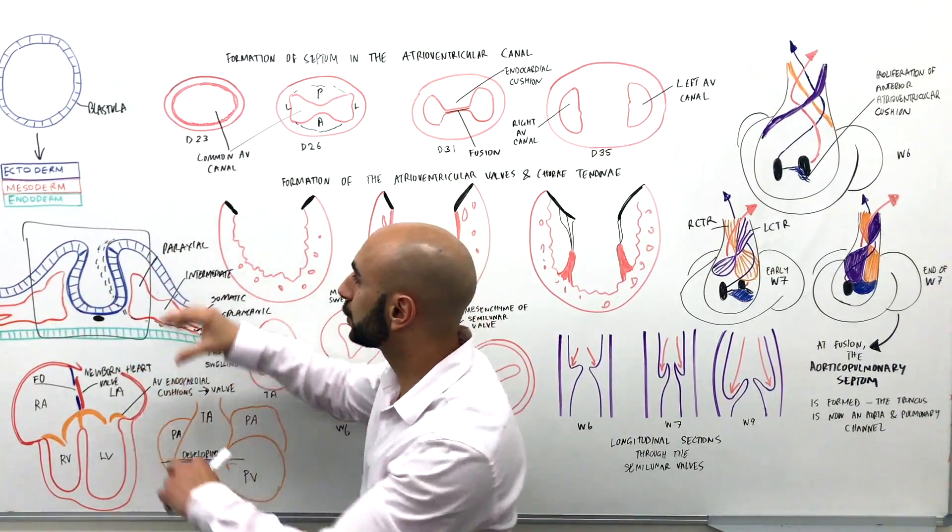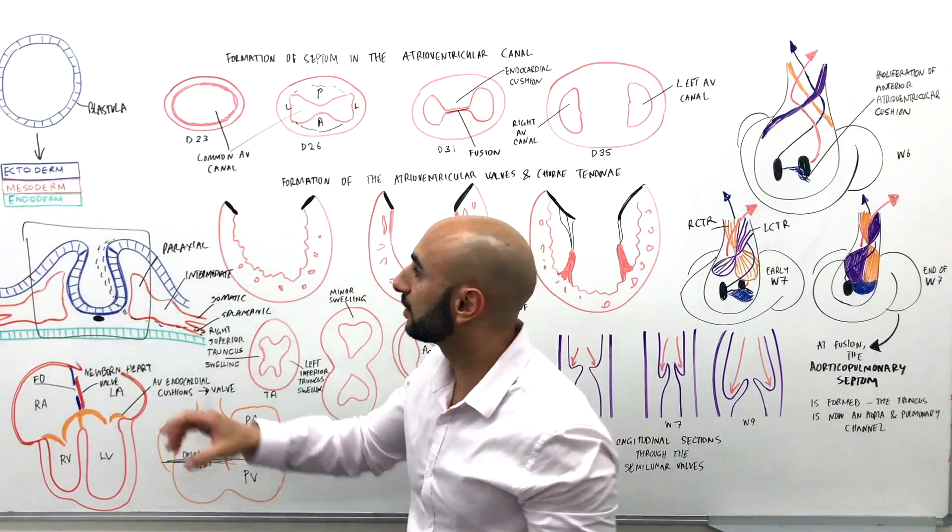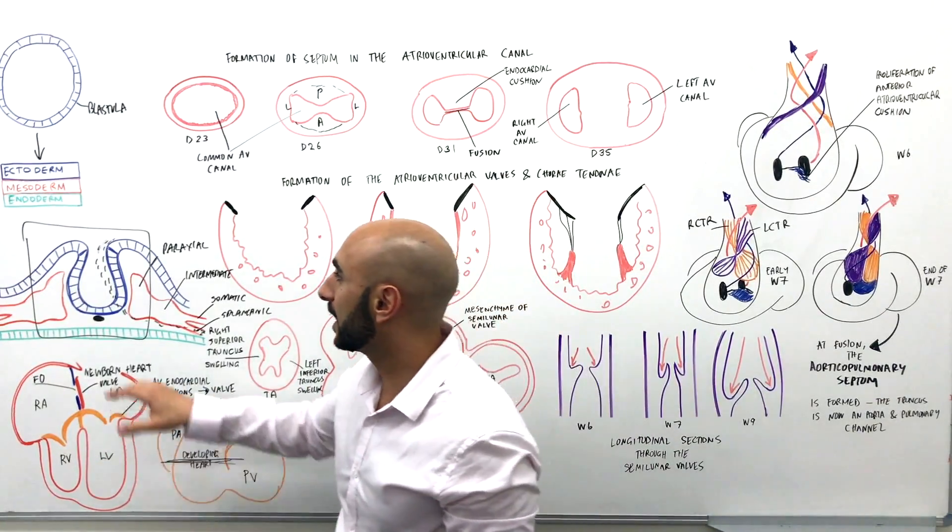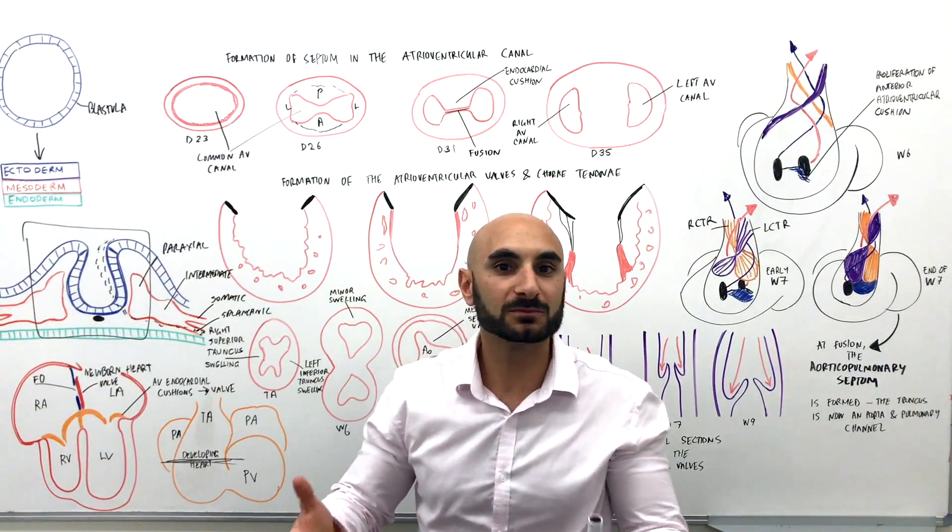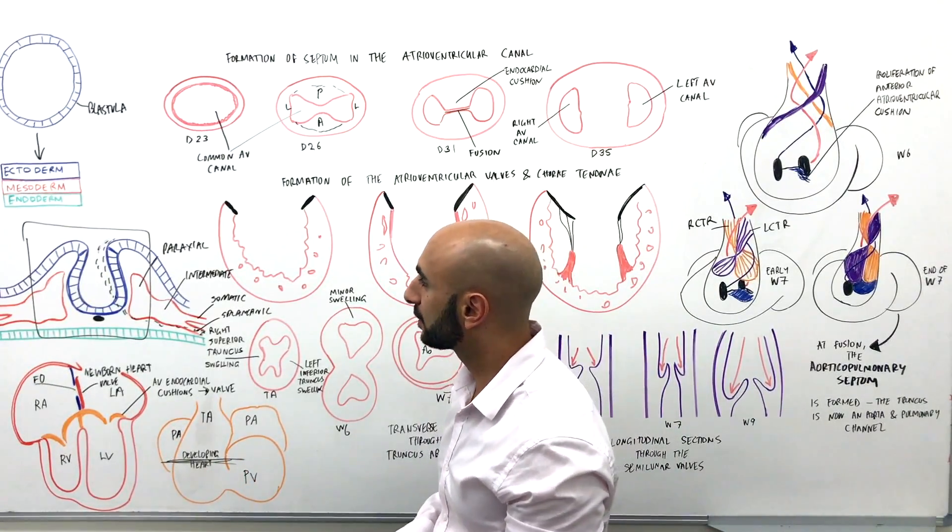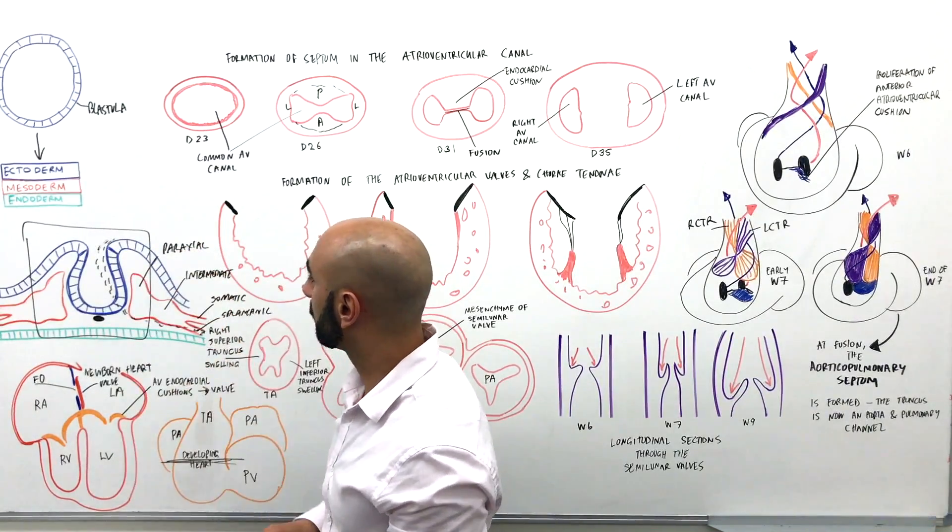Now this is a simplified version. We have ectoderm, mesoderm, and endoderm. And eventually these fold in a way so that you are surrounded by ectoderm, which is mostly skin, and that your endoderm will become your gastrointestinal tract just to keep it very simple.